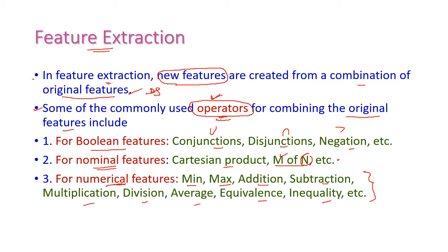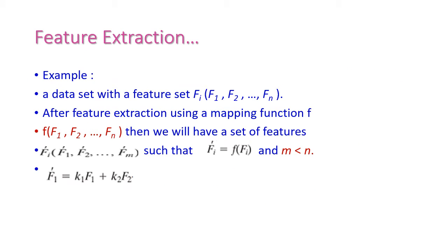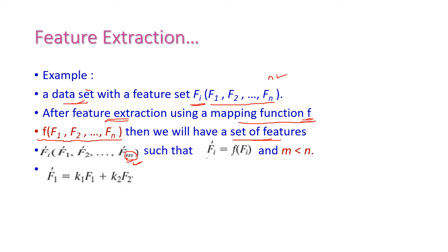So we have three different types of operators: Boolean, Nominal, and Numerical. For example, a dataset with feature set Fi which contains F1 to Fn — so totally N number of features. After feature extraction, by using some mapping function F, we apply F(F1 to Fn) and we will get a new set of M number of features. Here, F'(i) equals F'(F1), F'(F2), etc. So M number of new features have been generated, such that F'(i) equals F(Fi), where F is the mapping function.